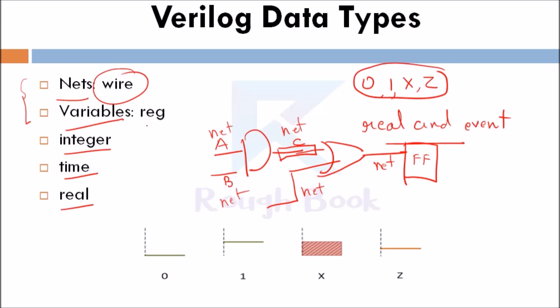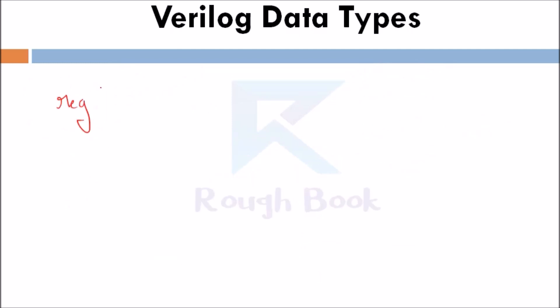Next is variables. Variables is an abstraction of data storage element and can hold values. Here variables can hold values where wire cannot store any values. An example is a flip-flop. Flip-flop can hold, it is a storage element. For example, reg [3:0] A. This is a vector because it is multi-bit. This is where it will store. These are the index 3, 2, 1, 0. This will store the values. This is a vector as it is multi-bit.